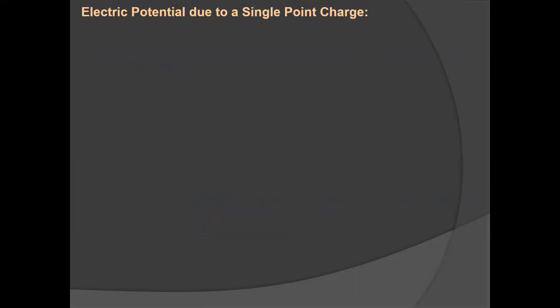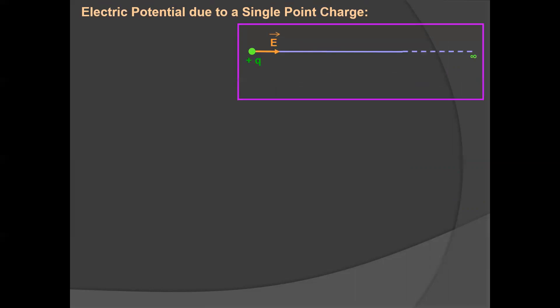Now we will discuss the important topic: electric potential due to a single point charge and its derivation. First of all, we take the source charge and assume that the test charge is at infinity. We are bringing the test charge from infinity to a given point B. In this diagram, the test charge is q0 and the source charge is plus q. We are bringing it up to point B, which is at distance r from the source charge.